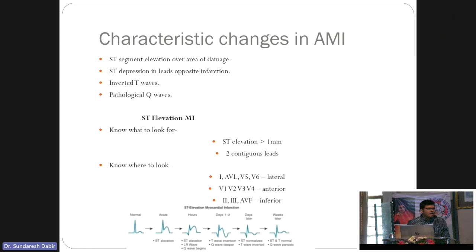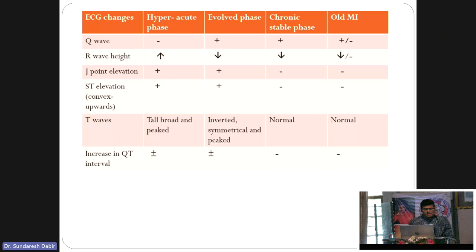In females, irrespective of age, it is more than 1.5 mm. For posterior and RV leads, the cutoff is even lower at 0.5 mm. So to summarize: 1 mm standard, 2 mm in V2/V3 for males over 40, 1.5 mm in females, and 0.5 mm for posterior and RV leads.